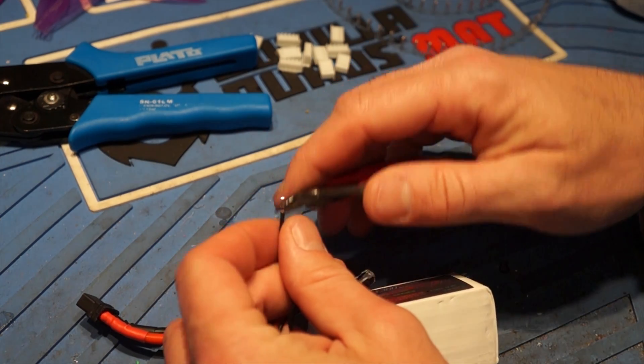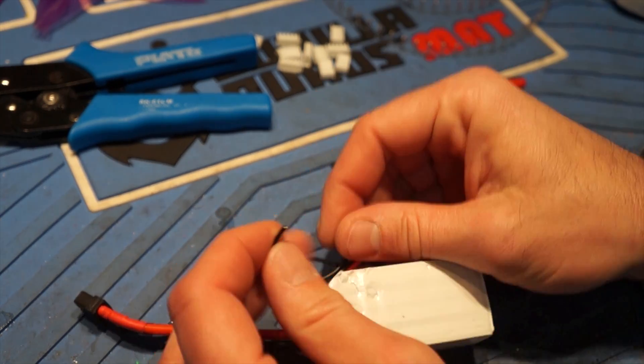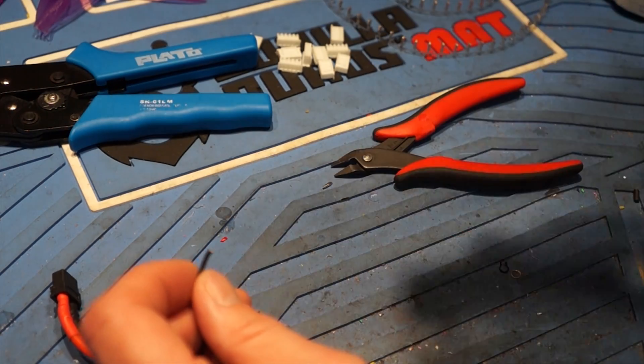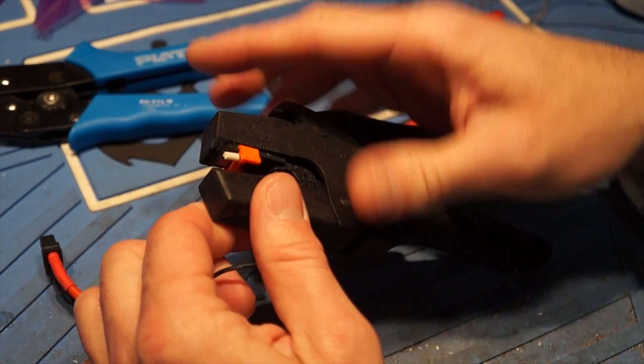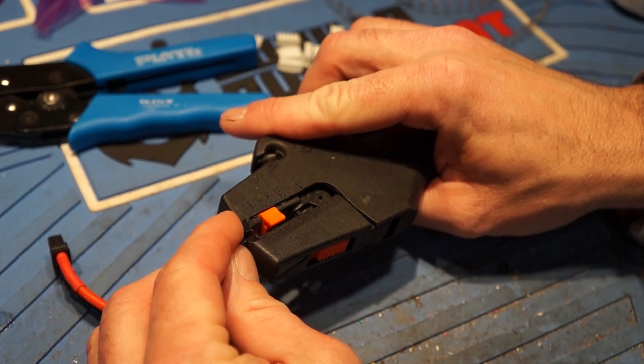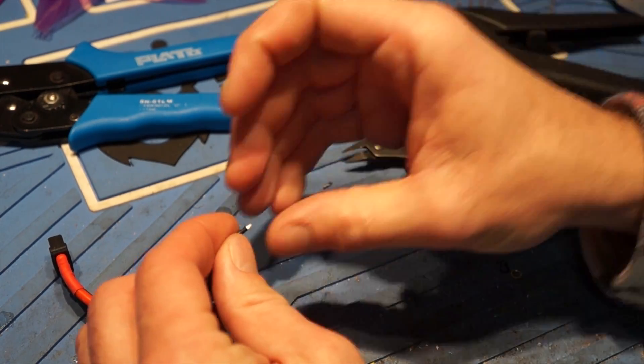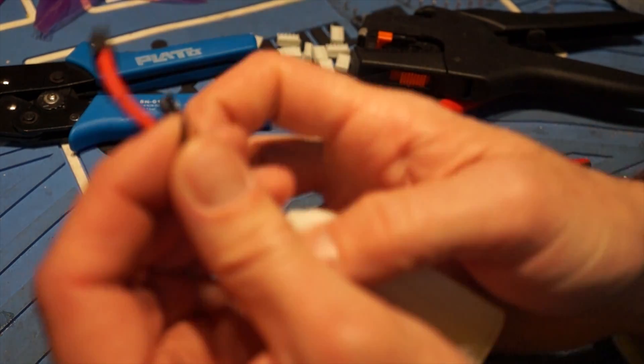So the first thing I'm going to do is I'm going to cut this off, and you want to do these one at a time. I'm going to take my strippers here and I'm going to strip back a little bit of wire. You don't want to have too much, you just want to have about that much.